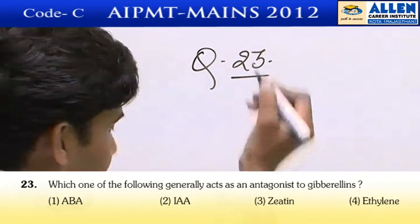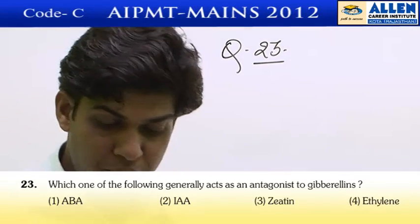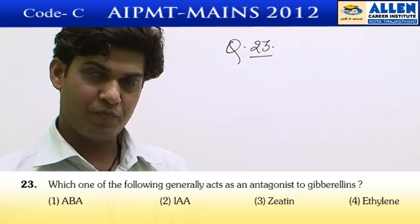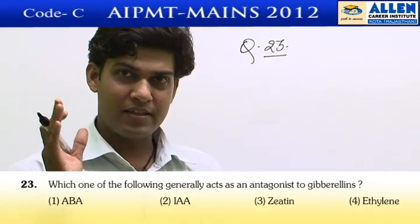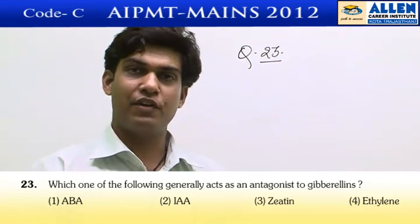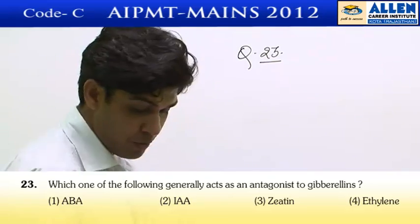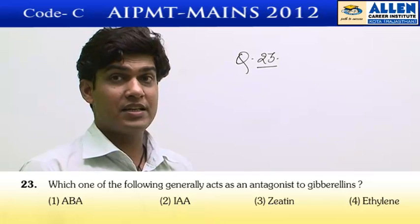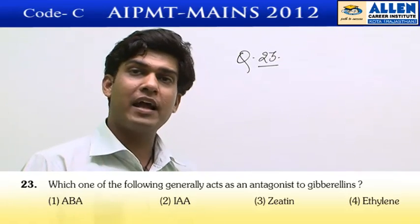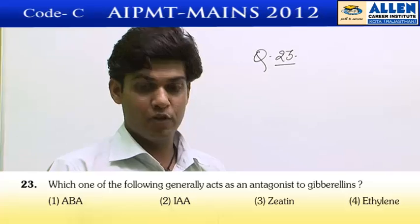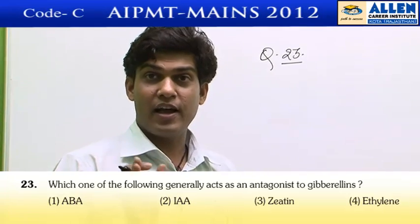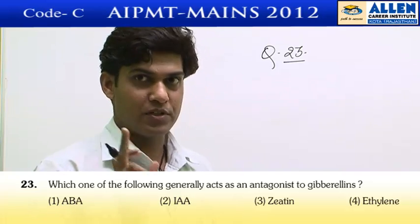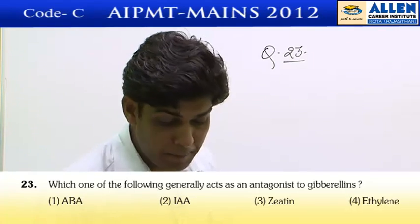Question number 23 asks: which of the following generally acts as an antagonist to gibberellin? We need to identify the chemical that opposes the activities of gibberellin. The first option is abscisic acid — yes, we know abscisic acid can inhibit all the activities that are promoted by gibberellin. So definitely all activities of gibberellin can be countered by abscisic acid, making it an anti-gibberellin chemical.